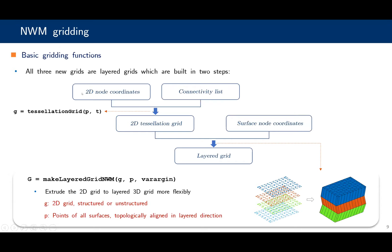Before introducing the gridding workflow, let's see the physical gridding functions. All three new grids are layered grids, built in two steps. First, we build a two-dimensional triangulation grid using the MRST function triangulation grid, providing the 2D nodes and connectivity list. Next, we use this 2D grid and the surface nodes to build a layered grid. The surface node sets are topologically aligned in the layered direction. I have written a new function to build a layered grid, which is more flexible than the MRST function, though it does not generate neighboring information — this can be obtained by the function computeGeometry.